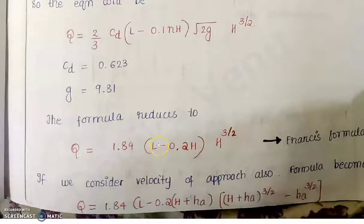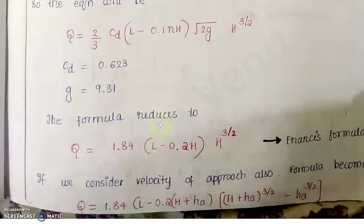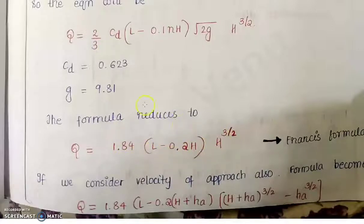For a rectangular weir with two ends, N becomes 2, so the term is L − 0.2H. Taking C_D as 0.623, the value of (2/3) × C_D ≈ 1.84 (using 0.628). The formula then reduces to Q = 1.84 × (L − 0.2H) × H^(3/2). This is a commonly used simplified form.